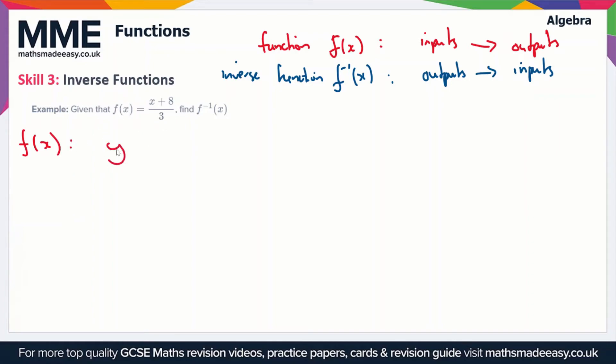So y is equal to (x + 8)/3. Now when we do the inverse function, which is f⁻¹(x), all we're going to do is replace the y with the x and the x with the y. So our formula is going to be x = (y + 8)/3.